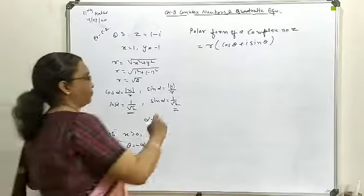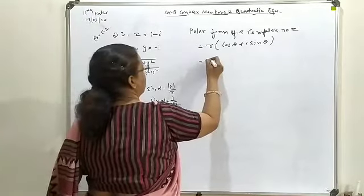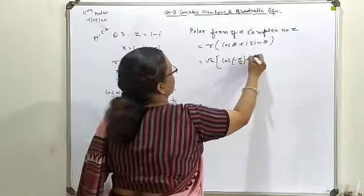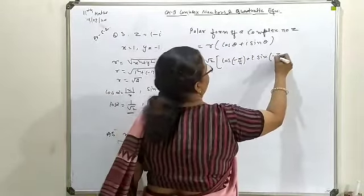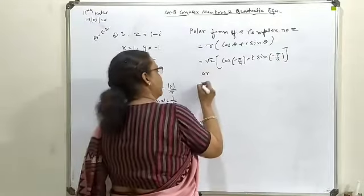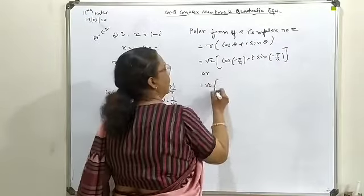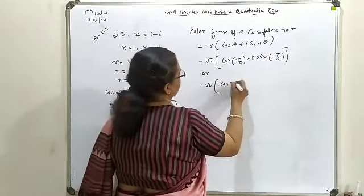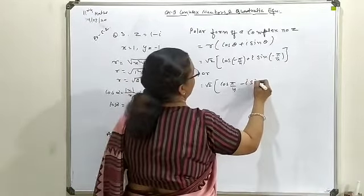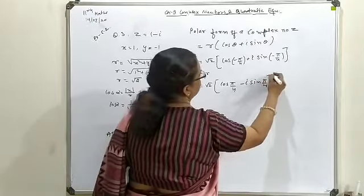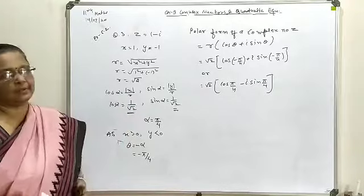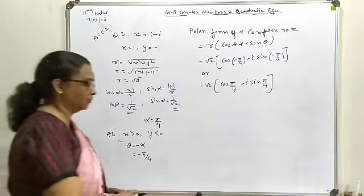Substituting in the polar form: z = √2 (cos(−π/4) + i sin(−π/4)). This can also be written as √2 (cos(π/4) − i sin(π/4)), since cos(−θ) = cos θ and sin(−θ) = −sin θ. Both forms are acceptable as final answer forms.